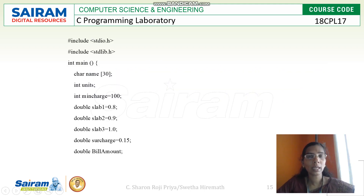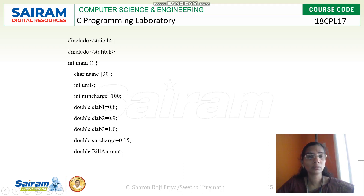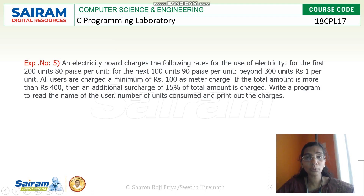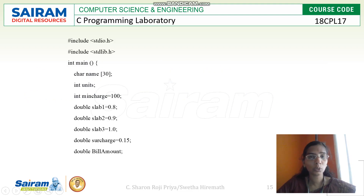I have taken slab1, slab2, slab3, with data type double. Slab1 is 80 paisa, slab2 is 90 paisa, slab3 is 1 rupee. For the surcharge — if the total bill amount is more than 400, I have to take a surcharge of 15 percentage of the total amount. The bill amount variable is also of double data type.